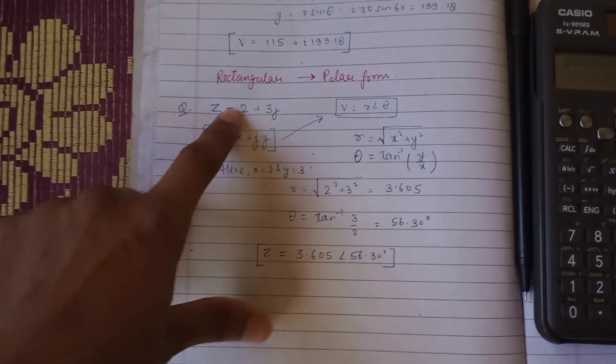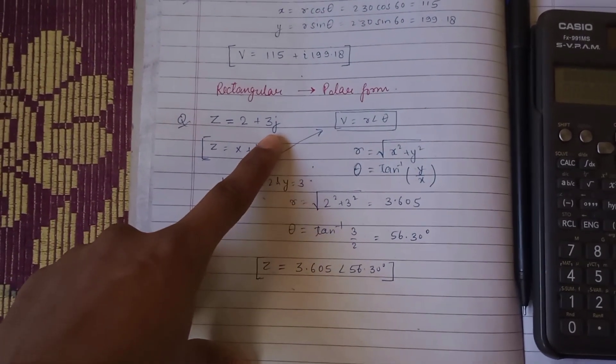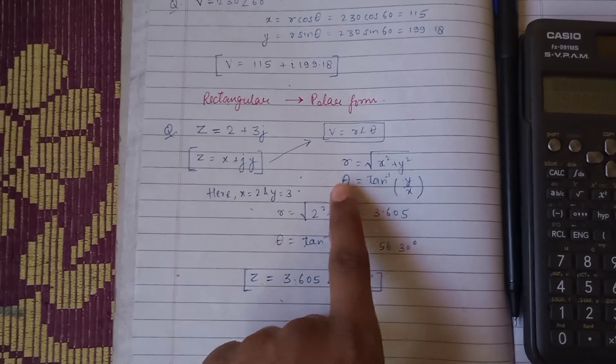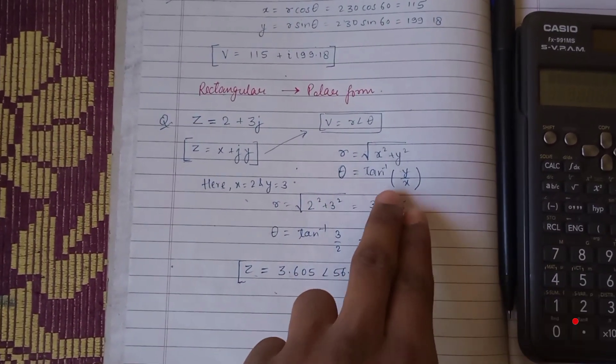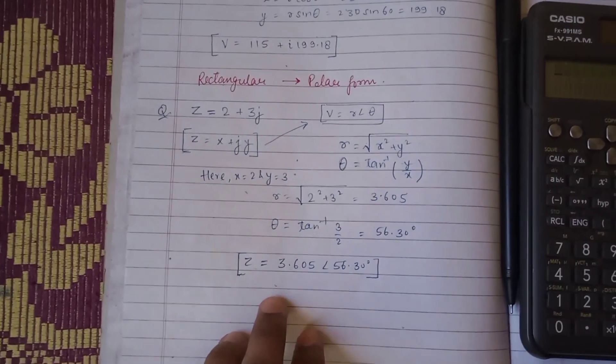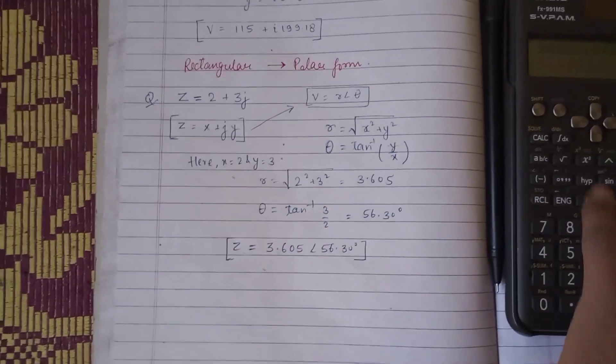Here, the value of x is 2 and the value of y is 3. We have to put these in the formulas and you will get the polar form. But this is a calculator video.